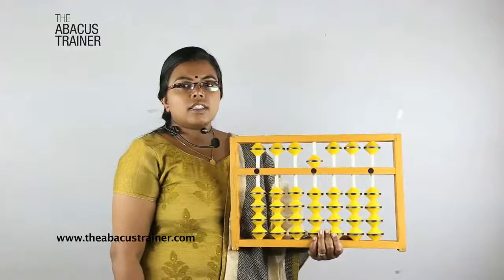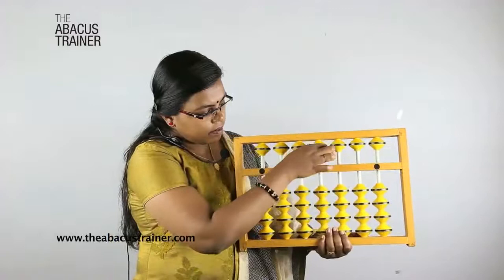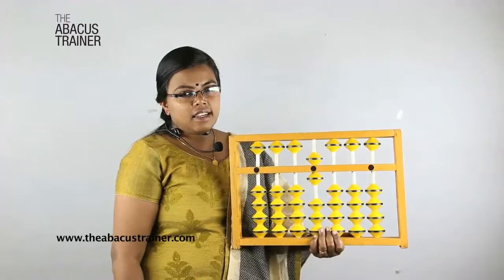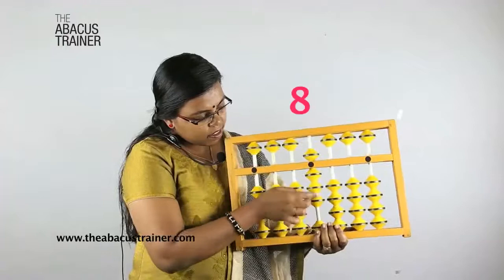It is simple to get 6 now. Move up 5 and 1 together. This is 6. Then 7, 8, 9.